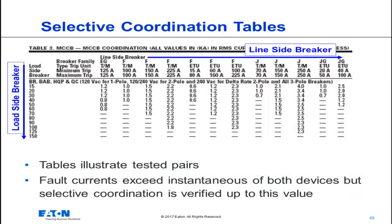The selective coordination tables present pairs of circuit breakers that, for the most part, have been tested to establish the current at which both devices open. The table is laid out such that the line-side or upstream circuit breaker is listed across the top, and the downstream circuit breaker is listed down the left side of the table. For each pair, the content of the table shows us the current value to which selectivity is maintained. Beyond the currents in these tables, both circuit breakers will open should they both see that current.